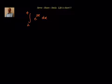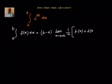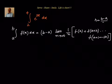We will use the formula: the integral from a to b of f(x) dx equals (b minus a) into limit n tends to infinity, (1/n) into [f(a) + f(a+h) + ... + f(a + (n−1)h)], where h equals (b minus a) divided by n.